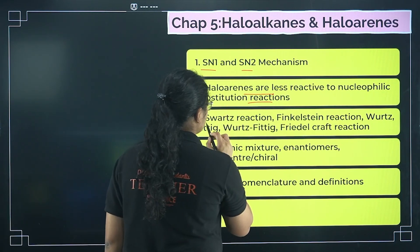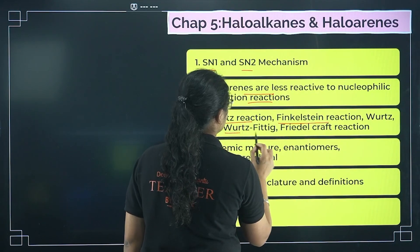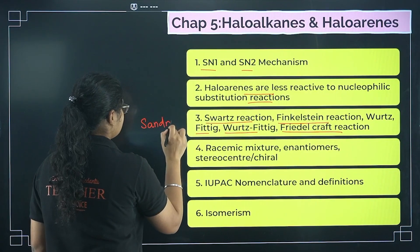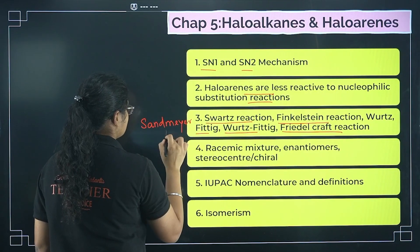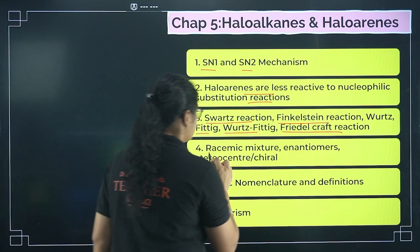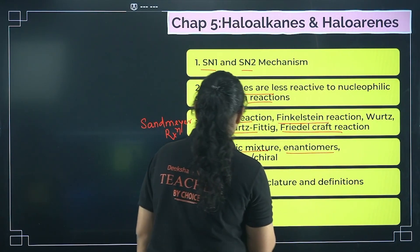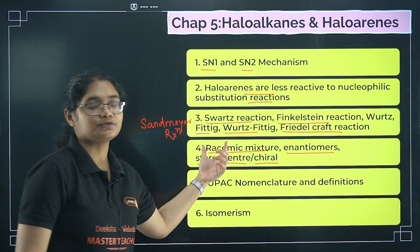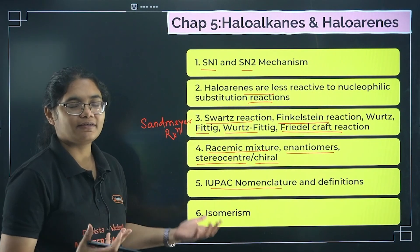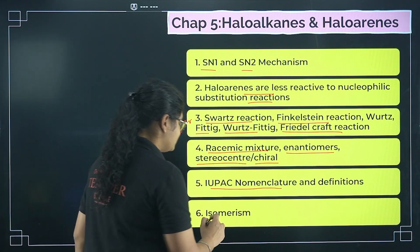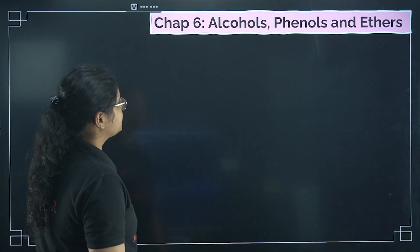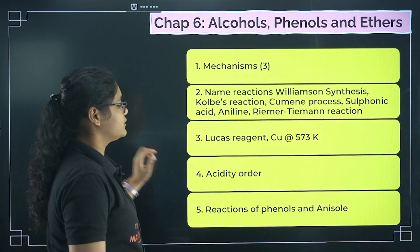Important name reactions: Swartz reaction, Finkelstein reaction, Wurtz reaction, Friedel-Crafts reaction, and Sandmeyer reaction. Also prepare racemic mixture, enantiomers, and stereocenter or chiral center definitions. Nomenclature is very easy here if you've studied from Class 11, and isomerism is also straightforward.